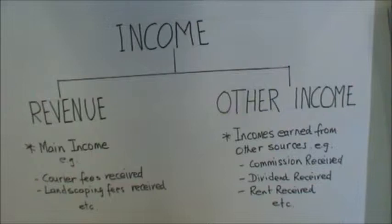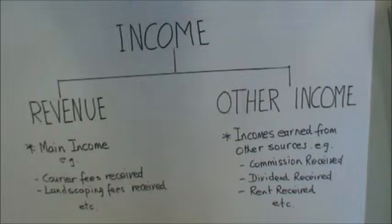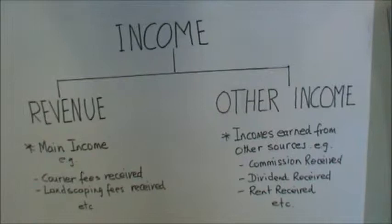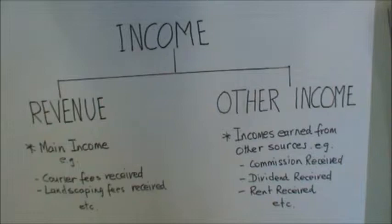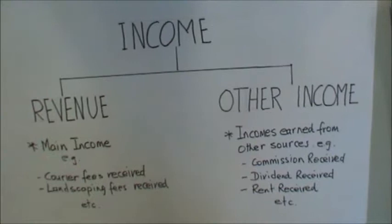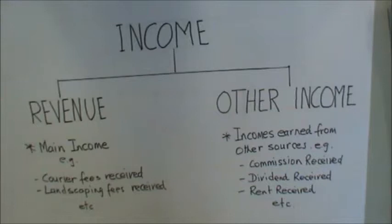After we've understood how businesses are categorized into two groups — the service and the trading — we're now going to go back to income and understand more about it. The way we report income in the income statement is as two types: one is reported as revenue, and the other is reported as other income.